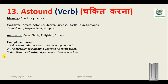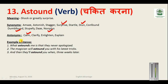The next word is 'astound'. Astound means to amaze, astonish, stagger or surprise. Synonyms: stun — 'I was stunned' or 'I was petrified' — stupify, dumbfound, and the most important word in this series: nonplus — 'I was nonplussed, I couldn't speak anything, I was speechless.' Antonym: calm. Example sentences: 'What astounds me is that they never apologized.' 'The magician will astound you with his latest tricks.'